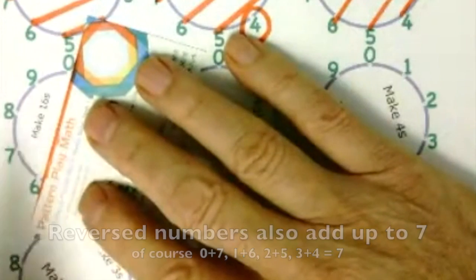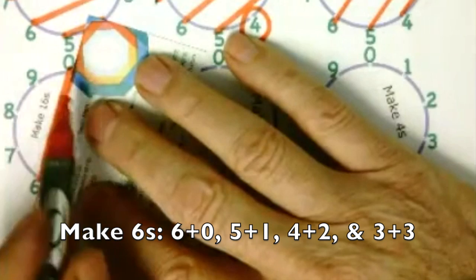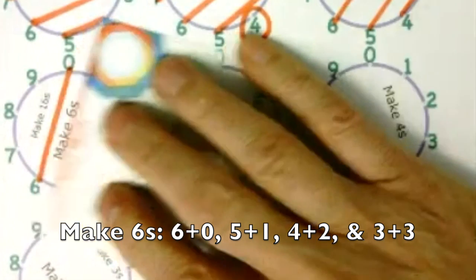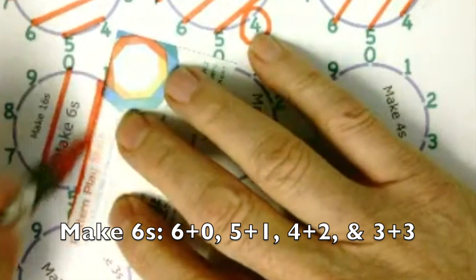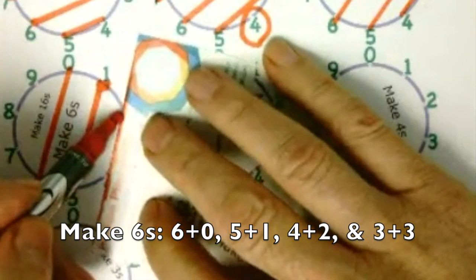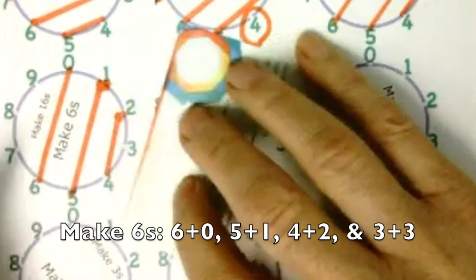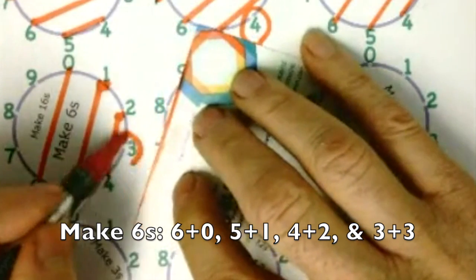And then we'll do 6s. So 0 and 6, we can always start with 0 and the number. That's a good way to start. And then moving to the right, there's 1 and 5. It's really cool that each one moves one number. And 2 and 4 make 6. And 3 is all by itself, so we circle 3, and 3 and 3 make 6.